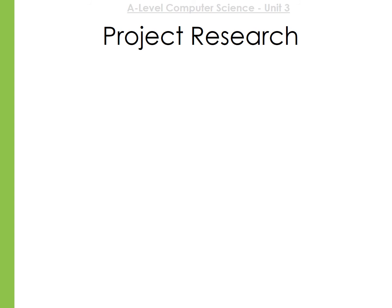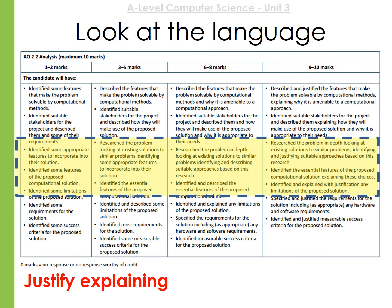The next part is the project research. Make sure you've addressed the first three sections before moving on. The 9 to 10 mark band again has only the different words 'justify' and 'explain'. You have to research the problem in depth, looking at existing solutions to similar problems, identifying and justifying suitable approaches based on your research. You'll also have to identify the essential features of your solution and explain these choices, and identify any limitations with justification.